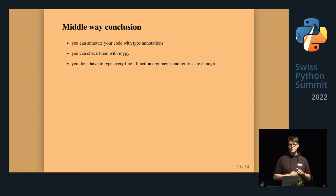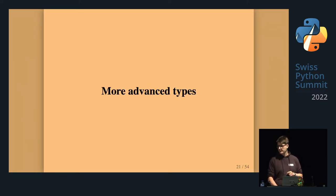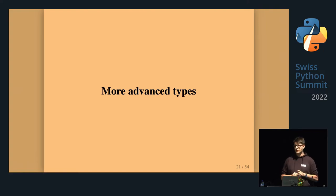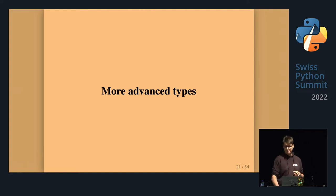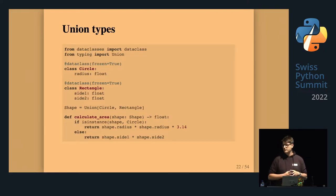NoReturn means the function never returns. If you try to return from such a function, mypy raises an error. You cannot create an instance of NoReturn, but keep it in mind for later. Having these basics covered, let's move to more advanced types.